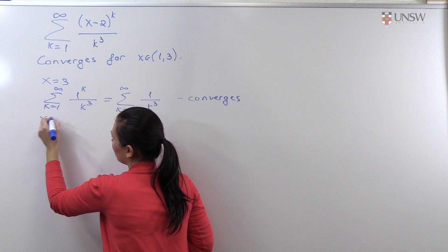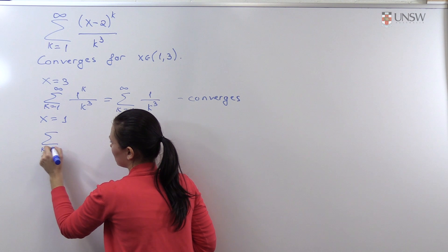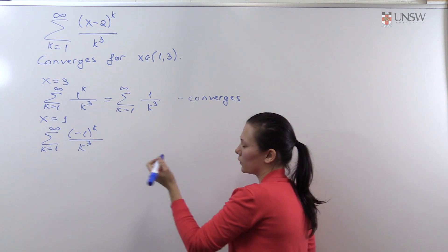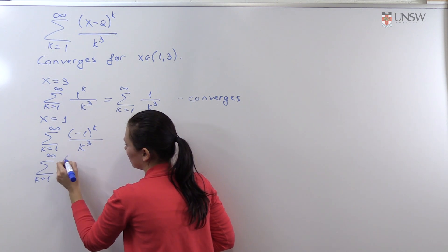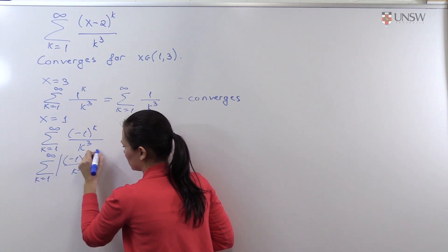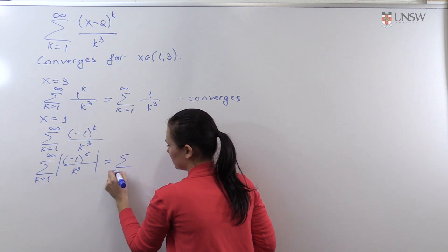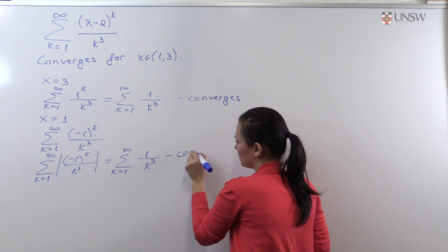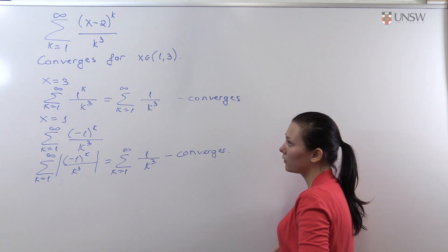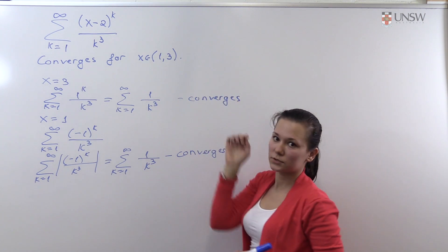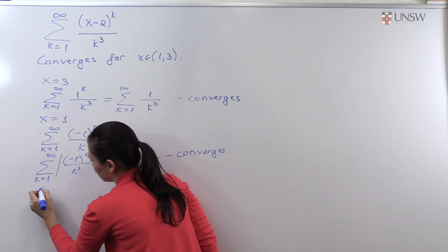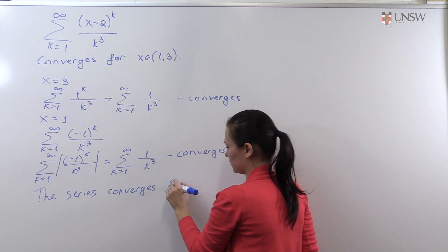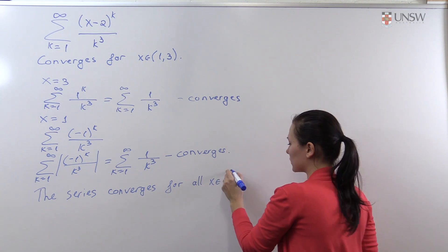Taking the other endpoint x equals 1, we get the series (-1)^k over k^3. Taking the absolute value of each term gives 1 over k^3, which again converges by the p-series test. Therefore, for both endpoints the power series converges, and we conclude that the original series converges for all x in the closed interval [1, 3].